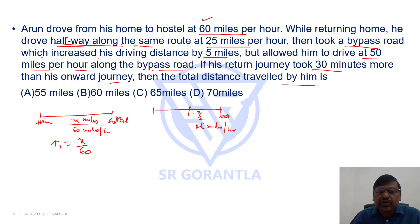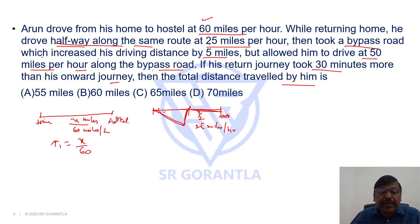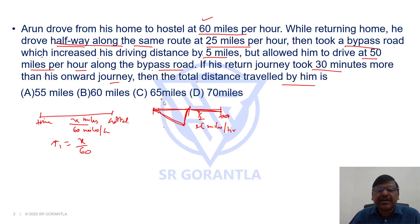Then he took a bypass route. From the halfway point he has not continued on the same route; he has taken a bypass route which increases his driving distance by 5 miles — he has taken a detour. So if the remaining half was x by 2, now it is 5 miles extra, meaning he travelled x by 2 plus 5 miles at a speed of 50 miles per hour.